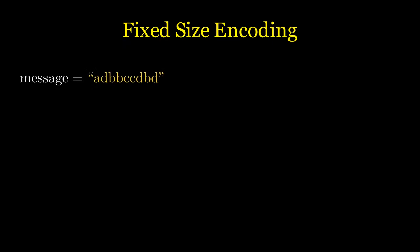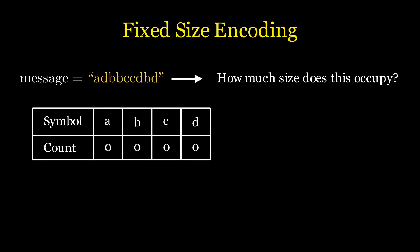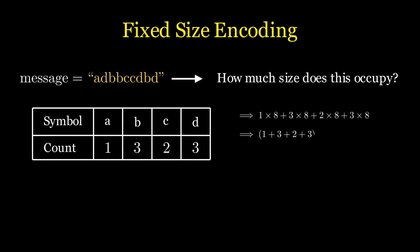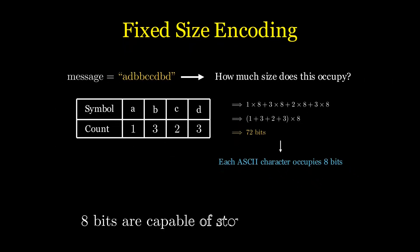Consider an ASCII-based string message. How much size does this occupy? We can create a frequency map to count occurrences of each character in the string, then multiply them by the size of one ASCII character and add them up to get the total size. Now, 8 bits are capable of storing 96 unique symbols, which is an overkill for our case. So can we do better?